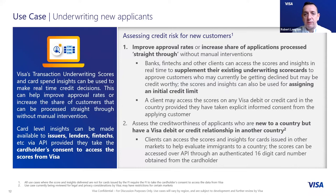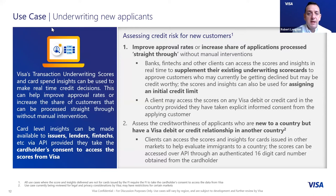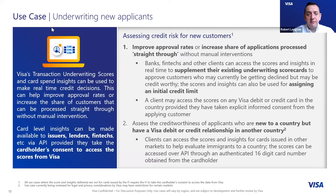The use cases this data powers are designed to improve approval rates at point of application, increase the share of applications processed straight through — meaning with no manual intervention — via a data link between Visa, CRIF, and the end client. This can improve outcomes, save time on manual intervention, and reduce overheads. The score and data from Visa are a fantastic addition to traditional credit bureau data — an additional layer providing more insight to what you can see today.